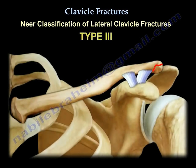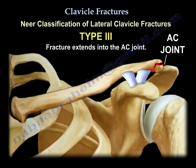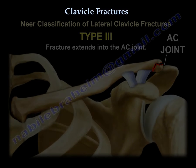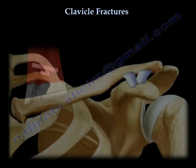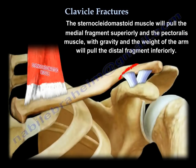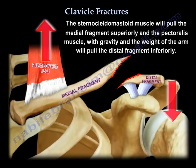Type 3 fractures extend into the AC joint. Regarding the typical deformity in clavicle fractures: the sternocleidomastoid muscle pulls the medial fragment superiorly, while the pectoralis muscle and gravity — the weight of the arm — will pull the lateral fragment inferiorly.